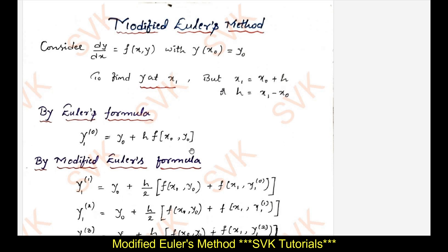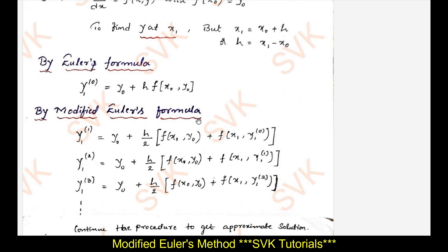After finding the Euler's formula value, we extend it using the modified Euler's formula by an iterative method. So y₁⁽¹⁾ equals y₀ plus (h/2) times [f(x₀, y₀) plus f(x₁, y₁⁽⁰⁾)]. For the second approximation, y₁⁽²⁾ equals y₀ plus (h/2) times [f(x₀, y₀) plus f(x₁, y₁⁽¹⁾)]. Similarly, y₁⁽³⁾ uses y₁⁽²⁾. We continue this procedure until we get an approximate solution that matches the previous value.